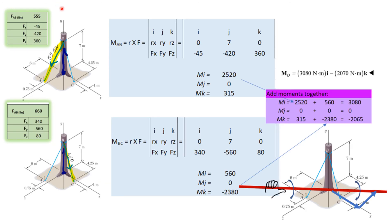Each force creates its own moment. For cable AB, the position vector goes from where it's rotating — the ground — to where the force is applied, straight up the tree trunk. The force in this cable is pulling down and forward. Those are the xyz force components we split from the 555 newtons previously. Once we have the position vector and force vector in the cross product, we walk through the calculation — there are a lot of zeros in here.